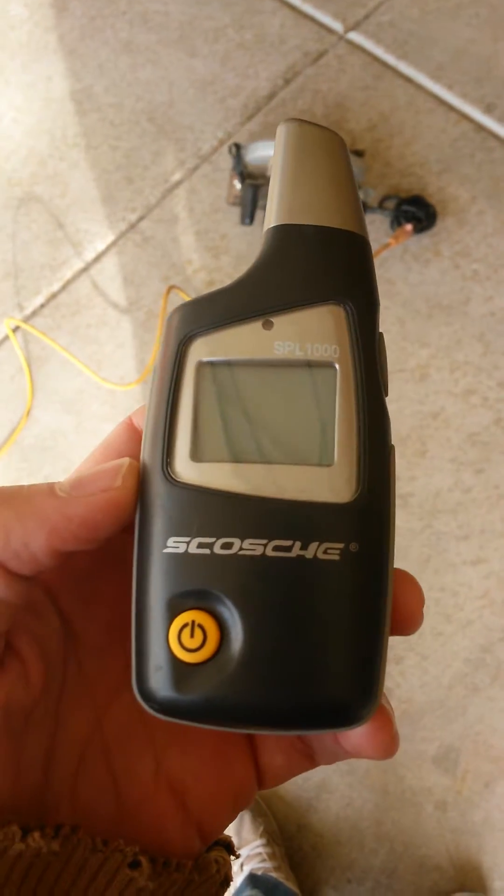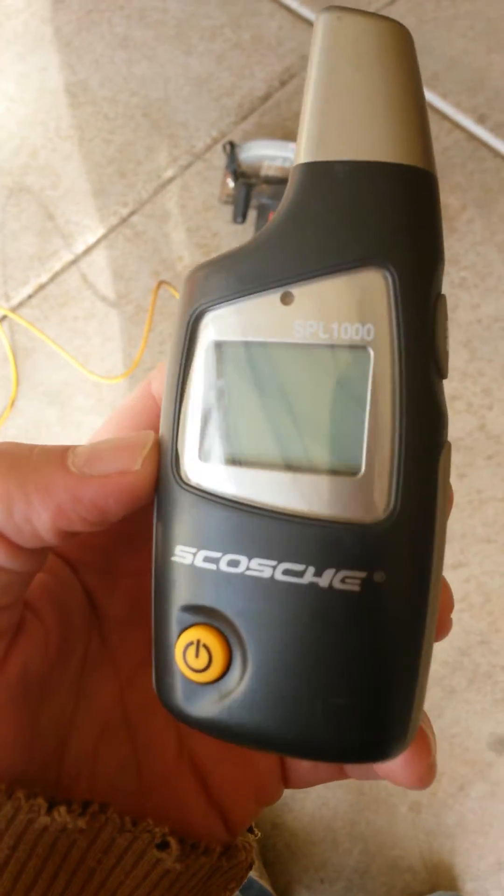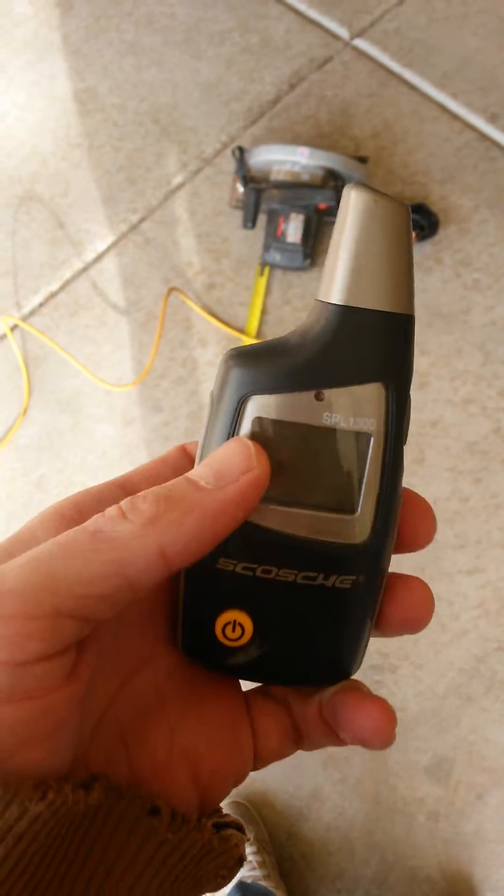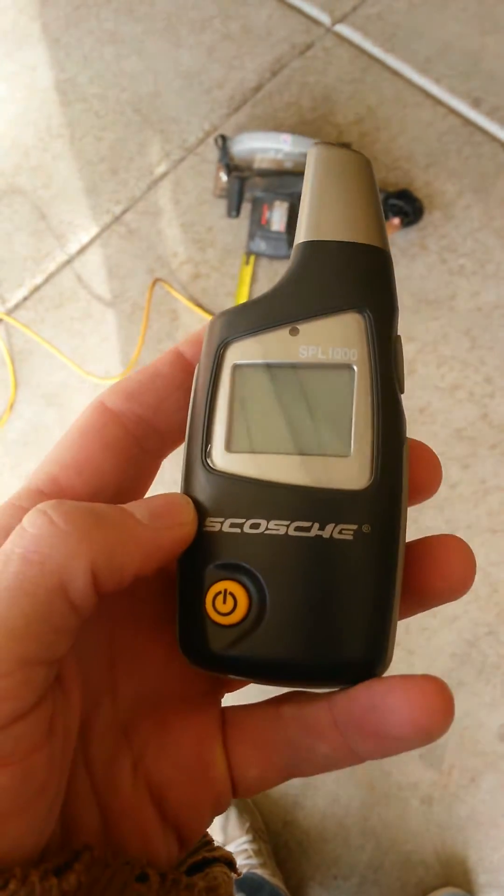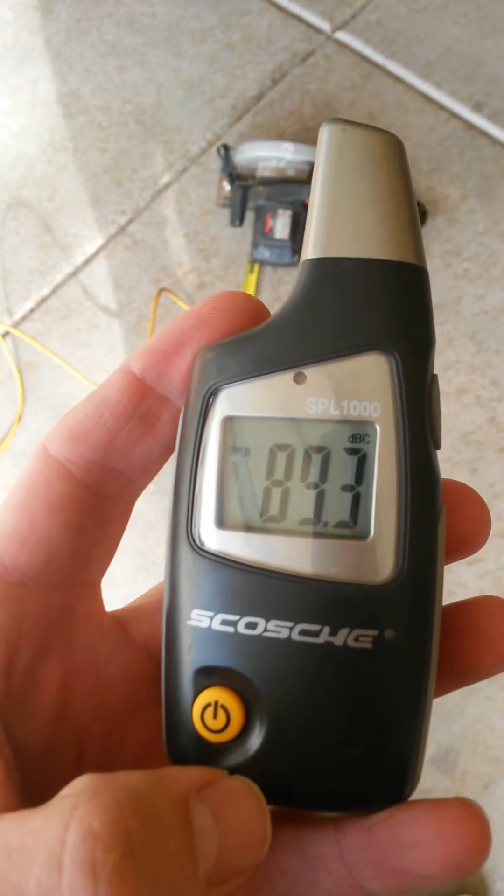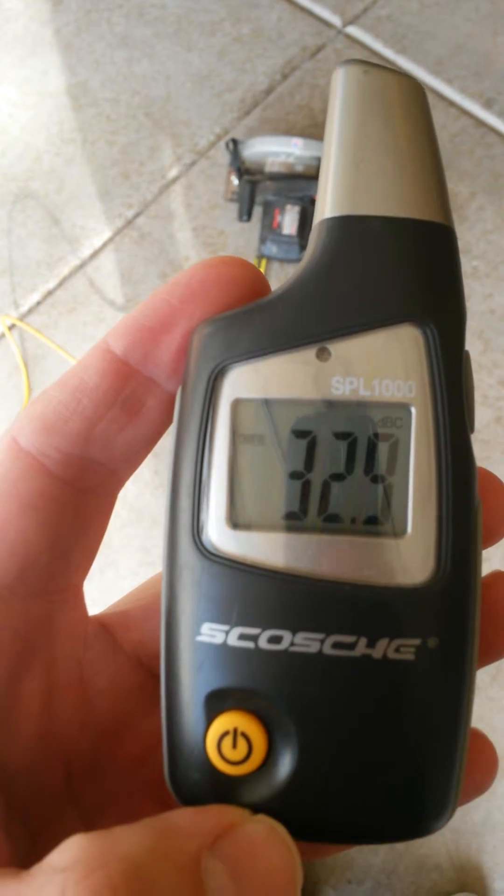Today I'm doing a quick review and calibration of a Scosch SPL1000. This is your basic cheapo decibel meter. I actually got this on clearance at Walmart. They aren't very accurate, especially in the lower and higher range.